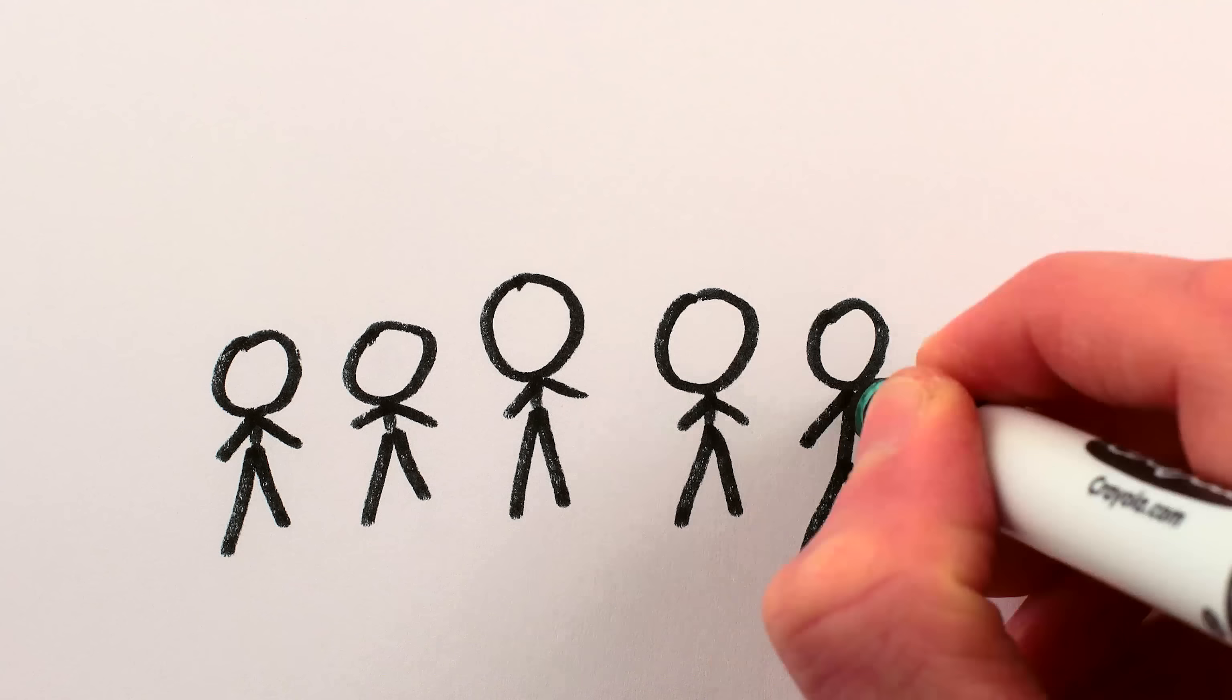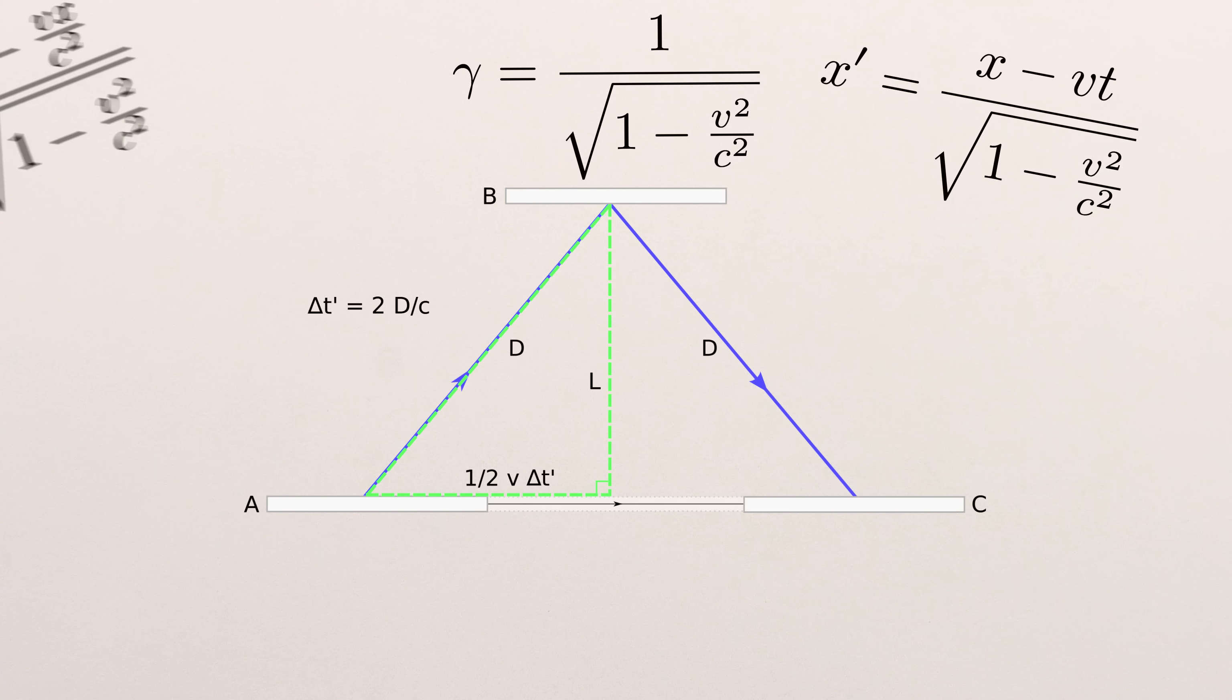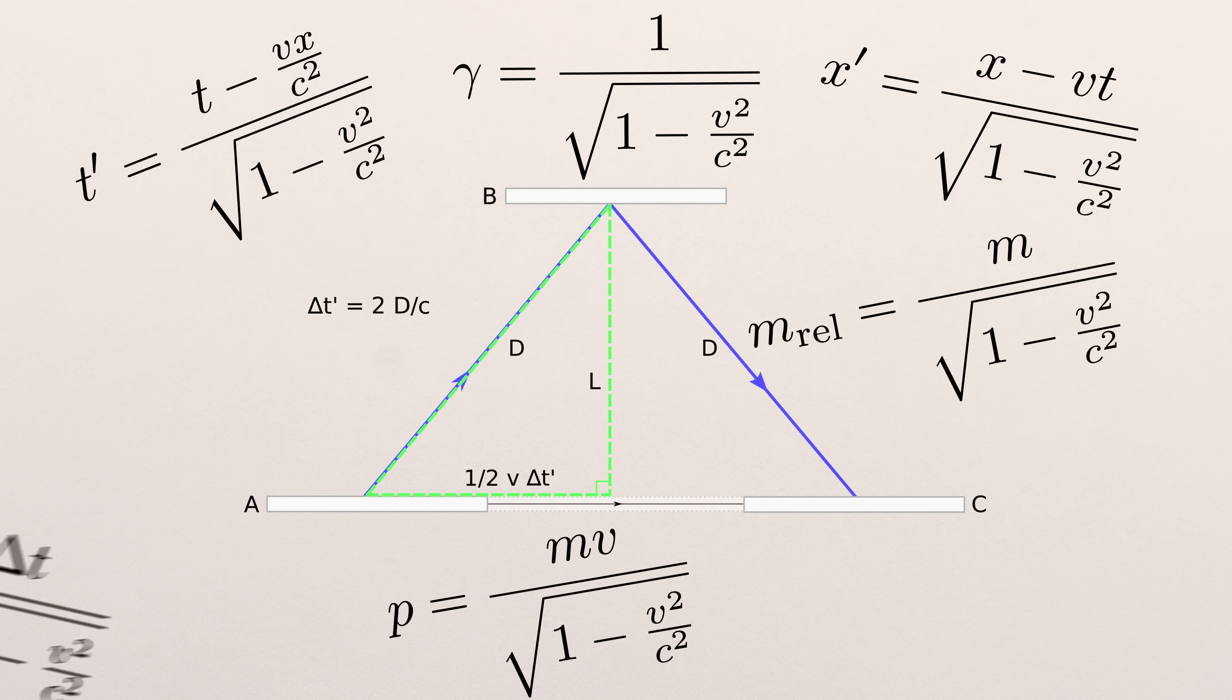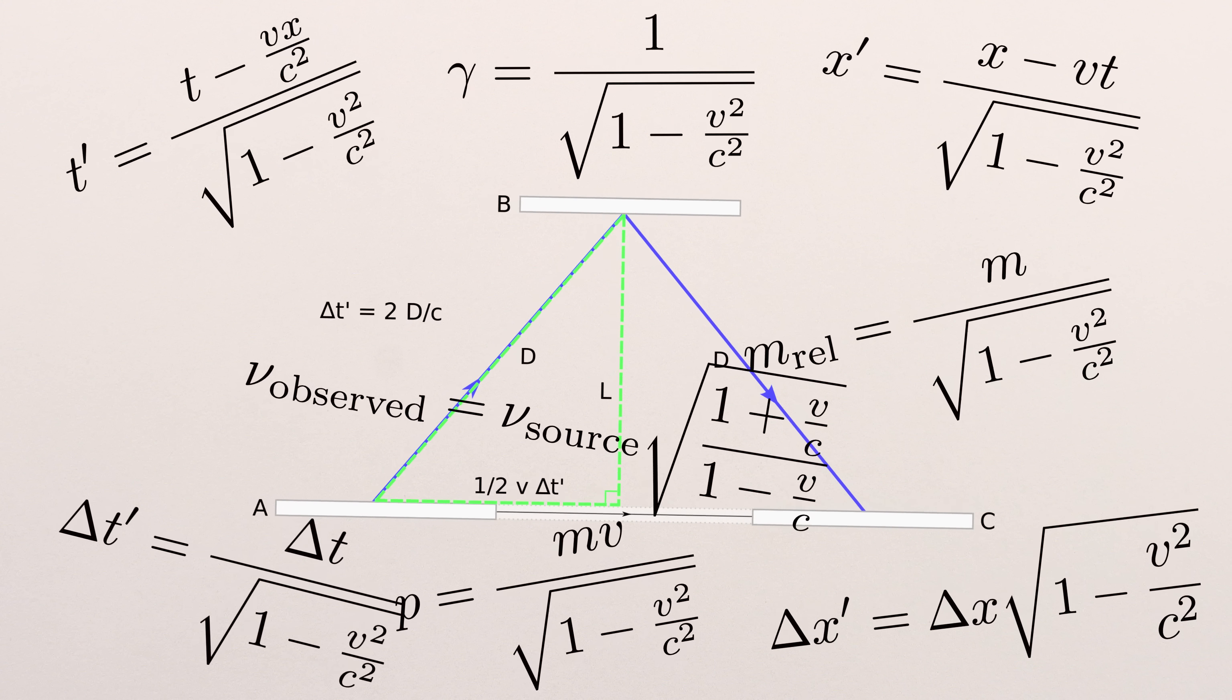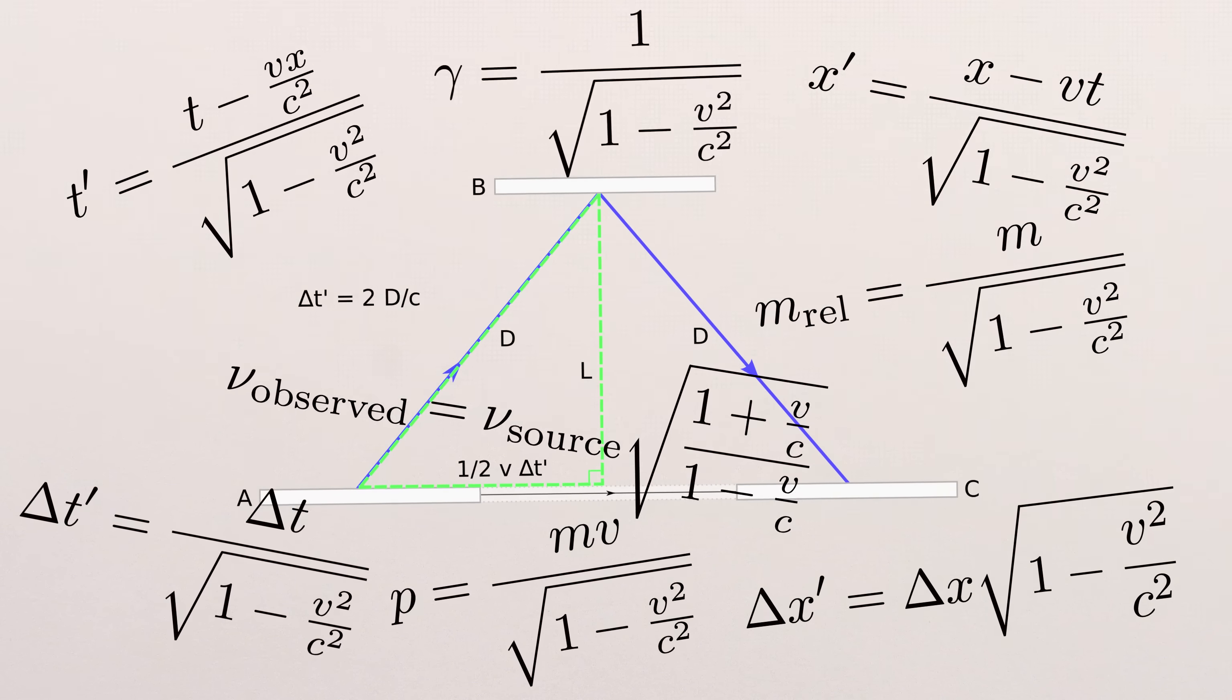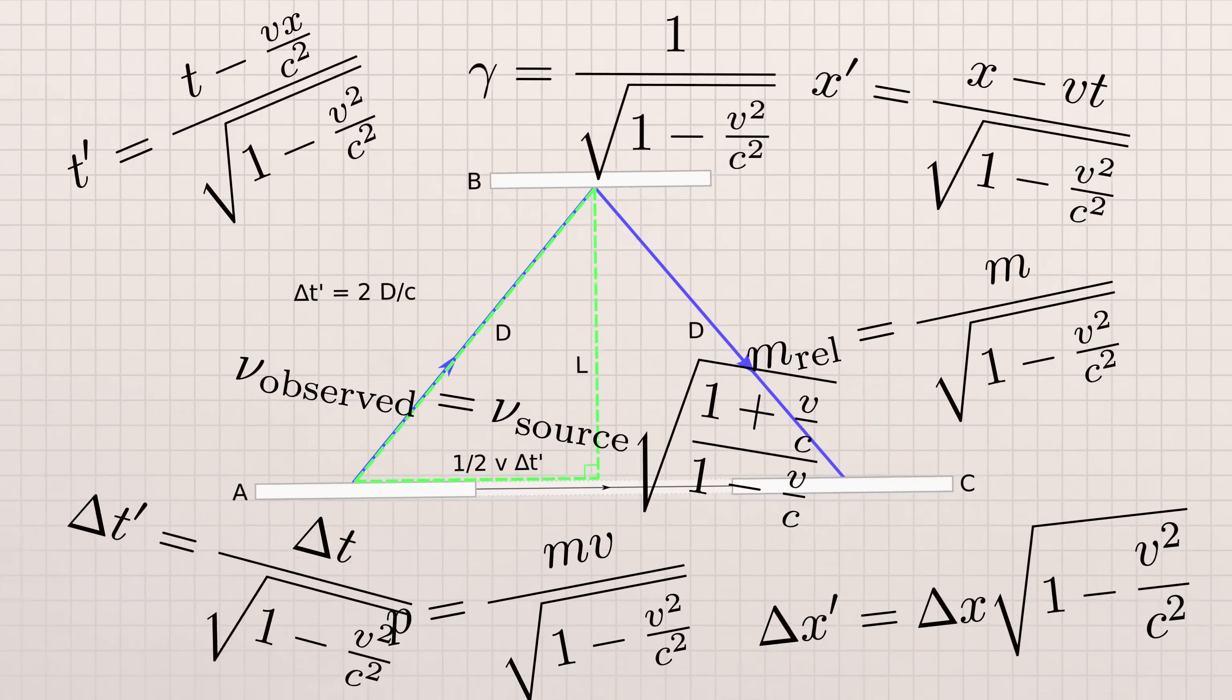However, the more important reason special relativity confuses so many people is that it's almost always introduced confusingly, with lots of complicated algebraic equations with delta x's and delta x primes and square roots which sometimes you divide by and sometimes you multiply by, and all the while you're scrambling to figure out where in all this symbological mess is there hiding a supposedly mind-blowing insight about the fundamental nature of space and time.